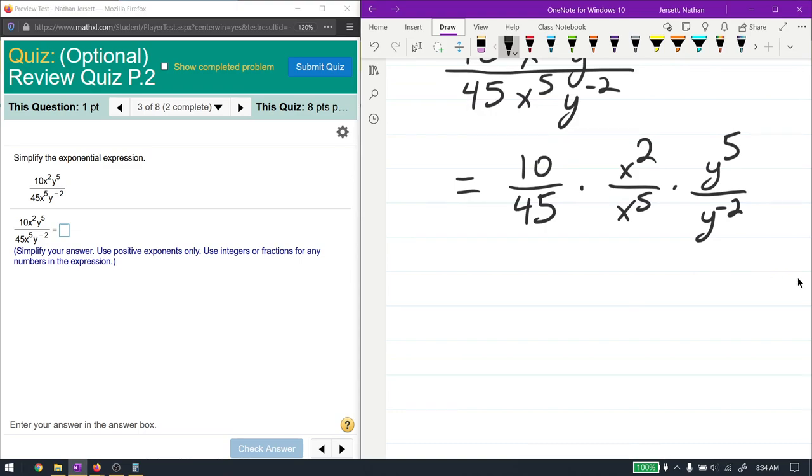I haven't changed the problem at all. I've just split up the fraction over these specific parts. And that's just to make it easier for me to know what I'm trying to reduce and what are like things, like bases, like terms, that kind of idea. This first one, I have 10 over 45, I can reduce this by 5.